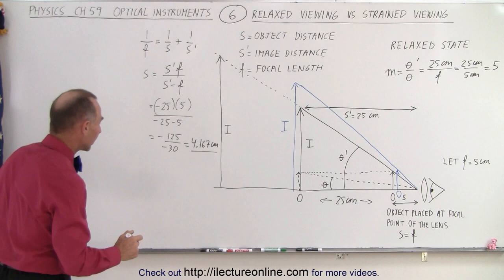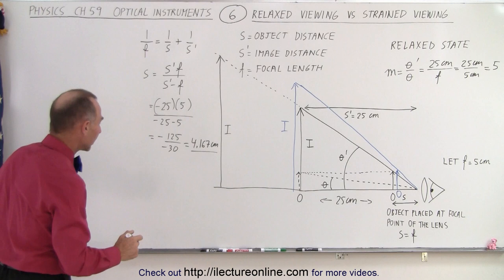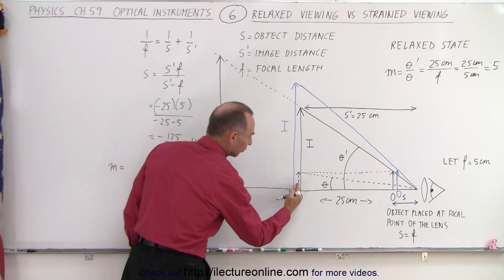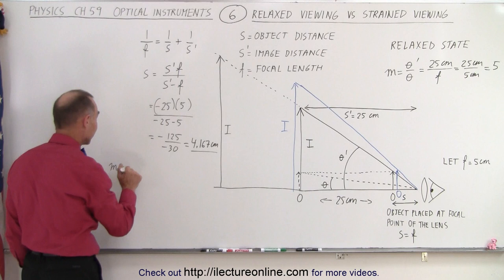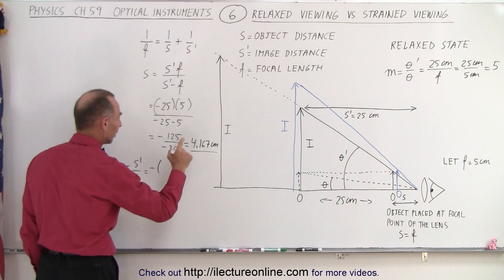What does that do? Well, now we can calculate the new magnification. And now since we force the image to be at the distance of 25 centimeters and we know the distance of the object, we can now calculate the magnification using this equation minus S prime over S. So this is equal to minus, let's see, minus,